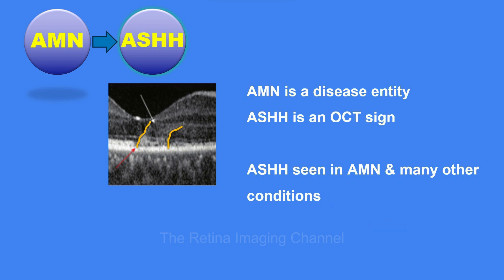This hyperreflectivity of the Henle fiber layer is called the Angular Sign of Henle fiber layer Hyperreflectivity, or ASHH. Essentially, ASHH is the OCT sign seen in AMN. In other words, the OCT characteristics of AMN are ASHH — the Henle fiber layer becomes hyperreflective and visible due to ischemia. That is what ASHH is.